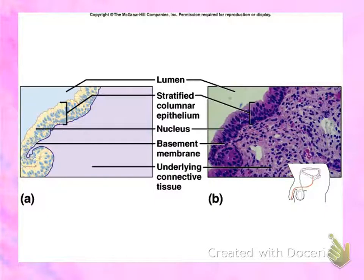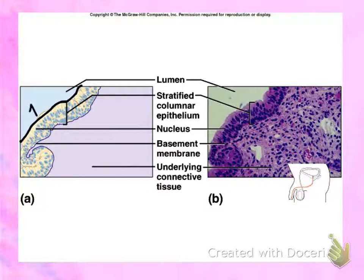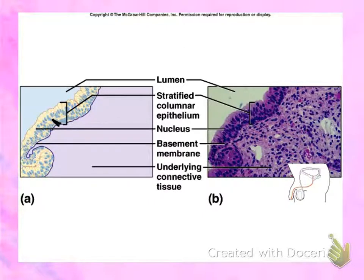Here is a picture of stratified columnar epithelium found in the male urethra. Only the area in the cream color is the epithelium. Here is your apical surface facing toward the lumen, and here is your basement membrane connected to the connective tissue. Note there are two layers of cells with oval-shaped nuclei — one row of nuclei and another row of nuclei — which makes it a stratified columnar epithelium.